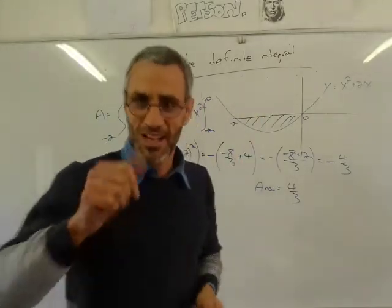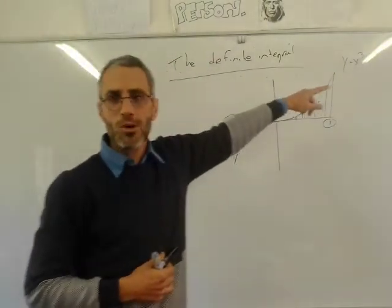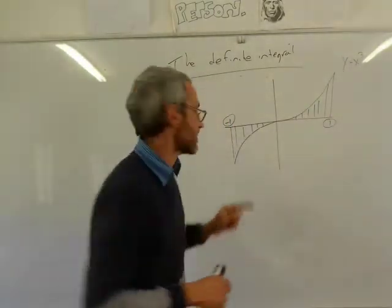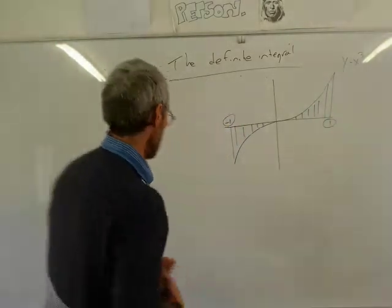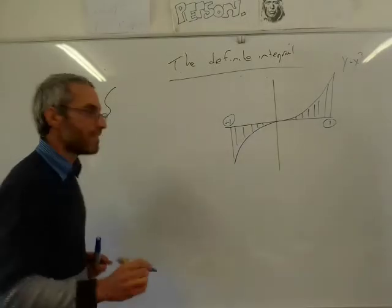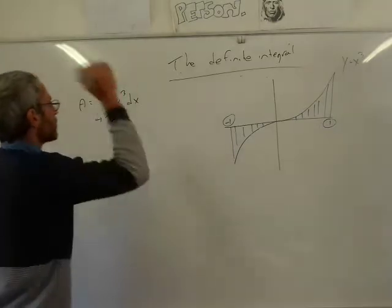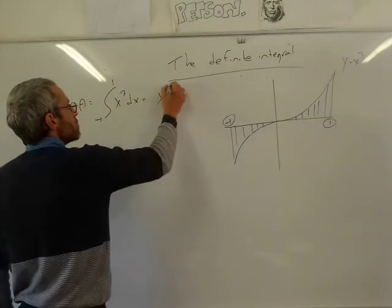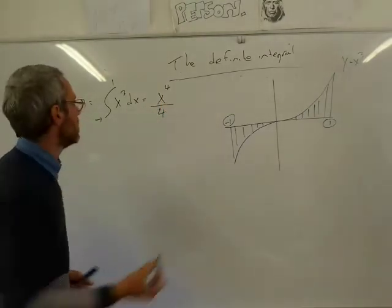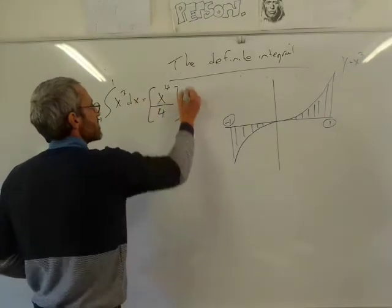Last example. We've got the cubic function y equals x cubed — it looks like an S-curve. We want to find the area between the curve and the x-axis between minus 1 and plus 1. We calculate the definite integral of x³ dx between minus 1 and 1. x cubed in past life becomes x to the power of 4 divided by 4. I don't need the constant.